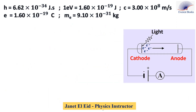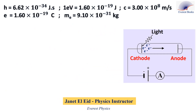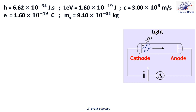A photocell is a device which converts radiant energy into electrical energy. This figure is a simple diagram of the circuit of a photocell which includes a dry cell, an emitter A, a cathode which is a pure metal, and an anode.